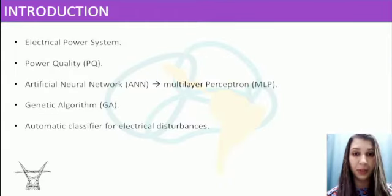The electrical disturbances automatic classification has been significantly important to deal with power quality problems. Hence, the use of artificial neural networks may be a way to automatically distinguish those disturbances, combined or not with optimization algorithms. So, in this work, we developed an automatic classifier for some possible disturbances using a multilayer perceptron with optimized training using a genetic algorithm.